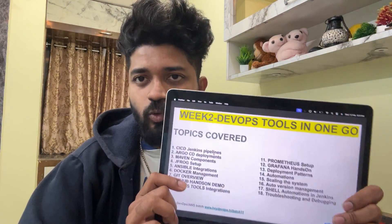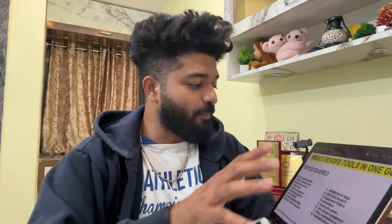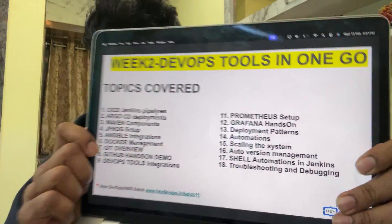Week two is the complete DevOps toolset in one go. Topics covered include: CI/CD, Jenkins pipelines, Argo CD deployments, Maven components, JFrog setup, Ansible integrations, Docker management, Git overview, GitHub hands-on demo, DevOps tools integration, Prometheus setup, Grafana hands-on, deployment patterns, automation, scaling systems, auto versioning management, shell automation in Jenkins, and troubleshooting and debugging.